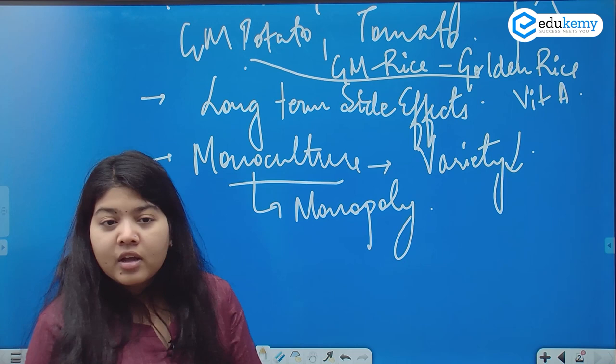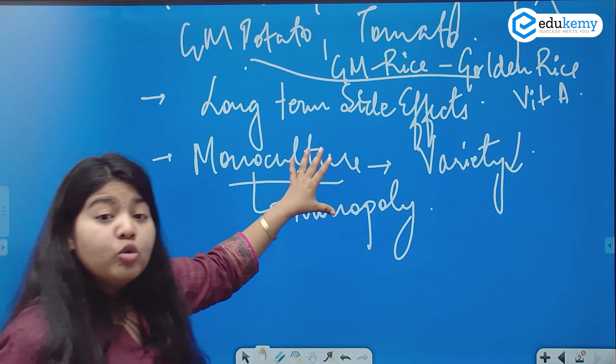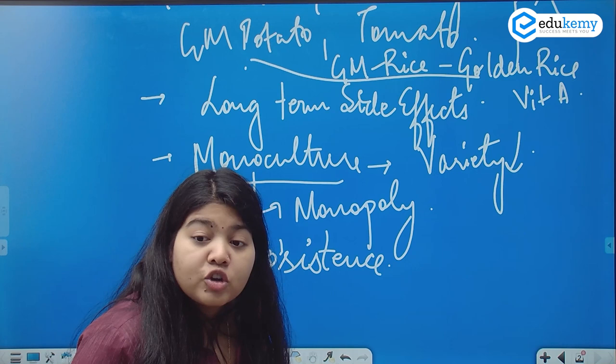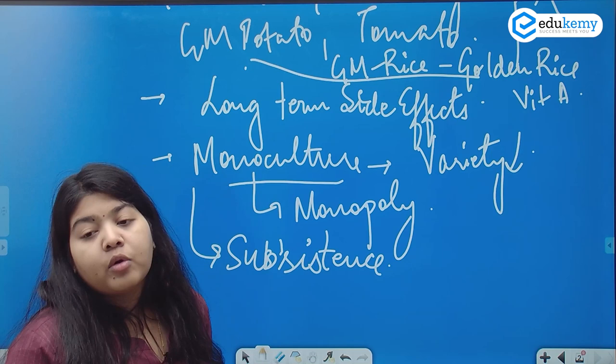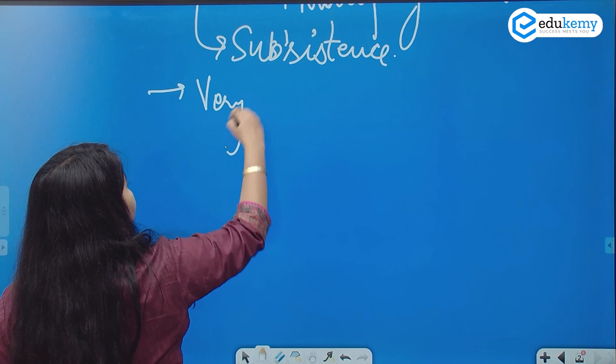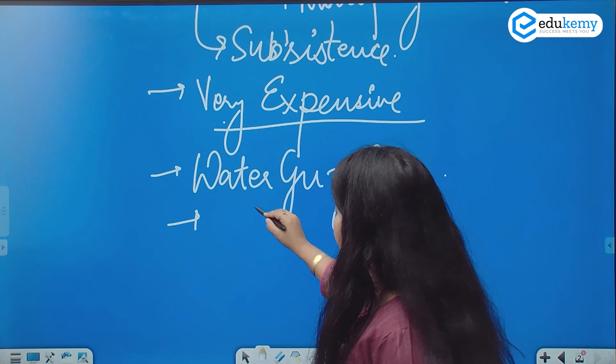This monoculture and monopoly over the market can actually do more harm to the farmer, because the majority of farmers are subsistence farmers. Do you think someone with very low income will be able to afford GM crops? GM crops are already very expensive and they are water-guzzling in nature.